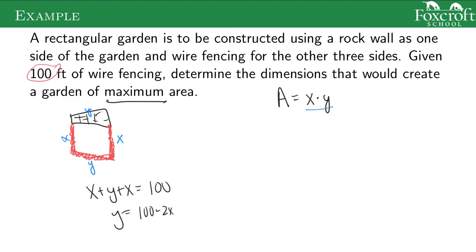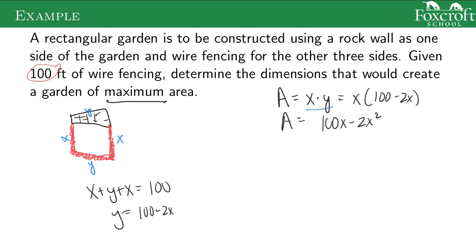So now my area equation — it's not really x times y, it's actually x times (100 minus 2x), which is 100x minus 2x squared. This is my area equation, and what I want to do is maximize area. I do the candidates test if I want to maximize an equation.